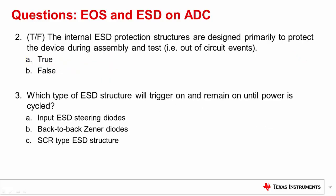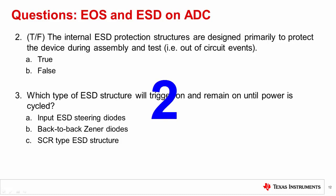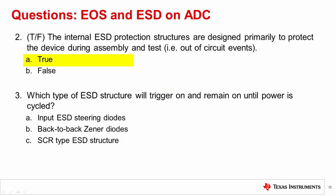True or false: the internal ESD protection structures are designed primarily to protect the device during assembly and test — for example, out-of-circuit events. The correct answer is true. Internal ESD structures are mainly intended to protect the device during manufacture, assembly, and test of the device. This means that the ESD structure is designed to work without power applied.